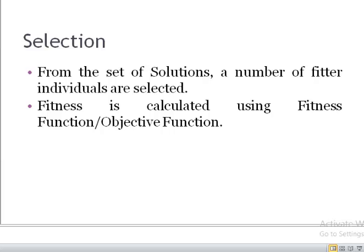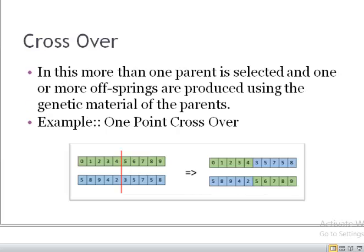After selection, we perform crossover. For crossover, we select more than one parent, and then one or more offspring are produced using the genetic material of the parents. There are different types of crossover techniques, but for simplicity right now we are only mentioning one technique: one-point crossover.